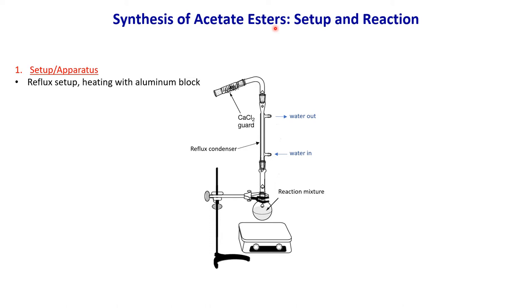To synthesize esters, you need to properly set up the glassware first. At the bottom is a round bottom flask where you put all the alcohol, acetic acid, and sulfuric acid, connected to a reflux condenser. The condenser is connected to a water hose — water comes in from the bottom and out from the top. As you heat the reaction, vapor climbs and when it touches the cold condenser, it condenses back into liquid and falls back into the reaction vessel.